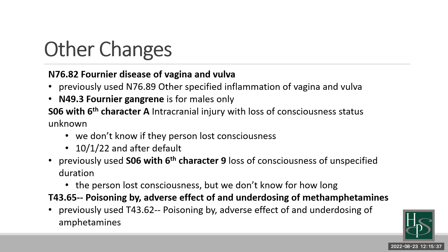Fournier's gangrene for women is another important addition. The N49.3 code is for males only, and even if the doctor diagnosed a female patient with Fournier's gangrene, using that specific code set under male genitalia on a female patient's claim would cause a reject. The coding clinic previously told us to use N76.89, and we'll continue to do that until October 1st when we get a new code for women — N76.82. Additionally, SO6.6 for intracranial injury has changes to its default code.